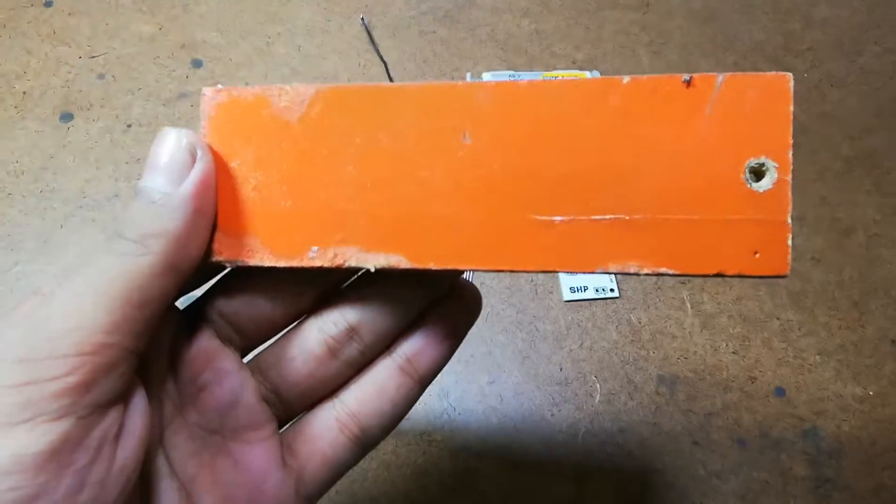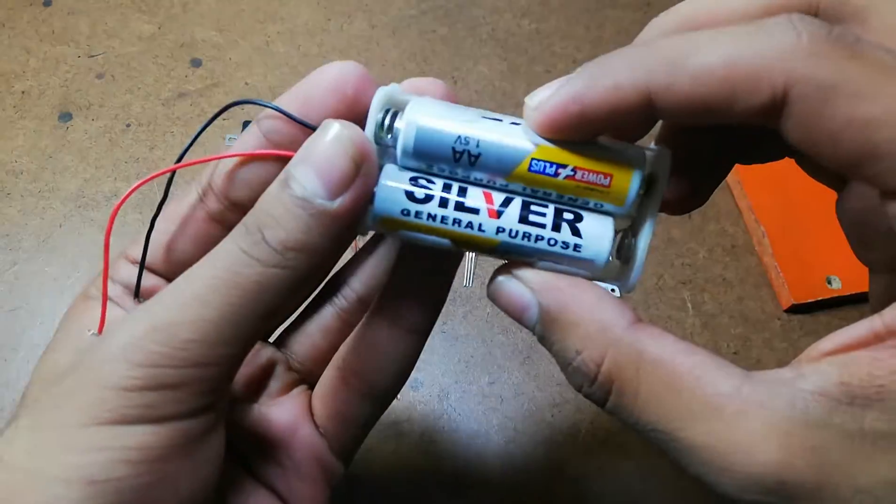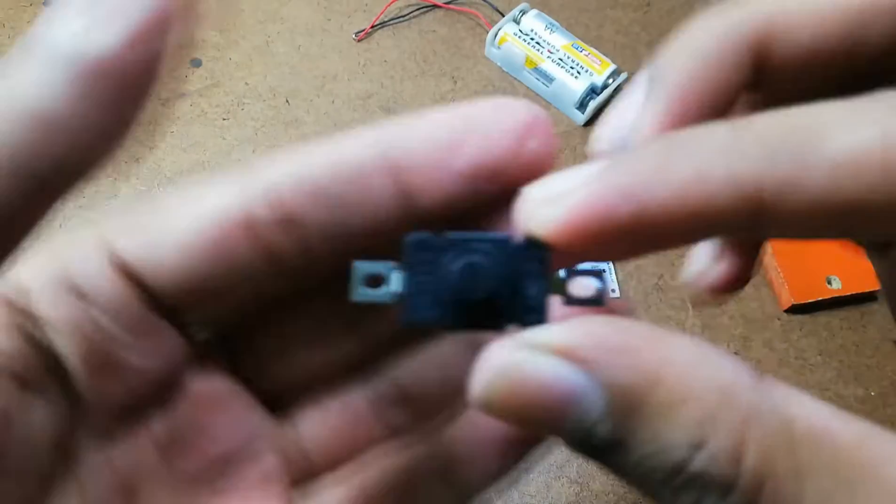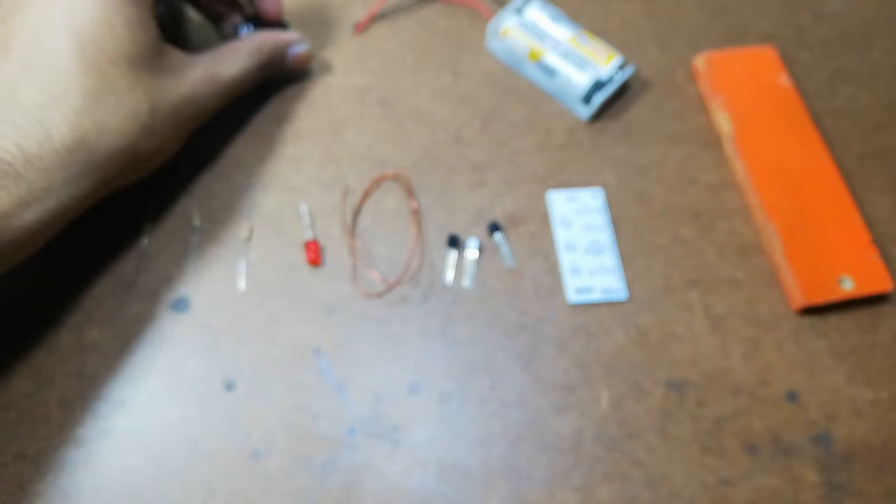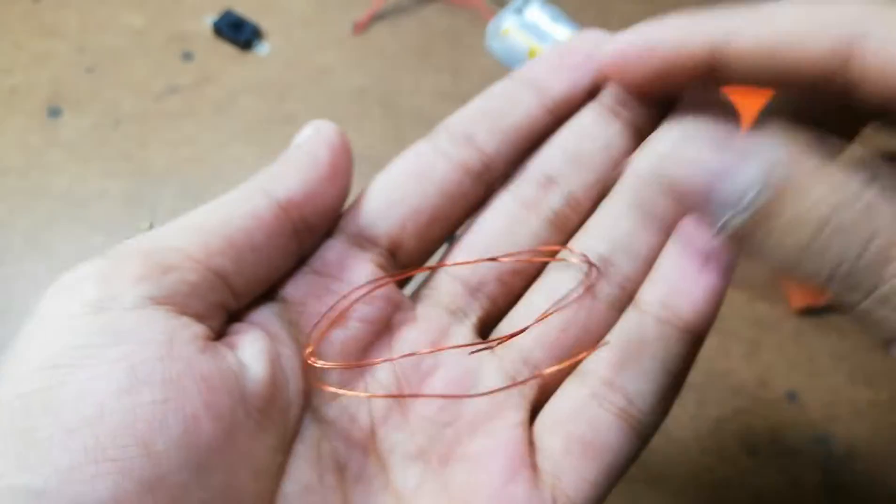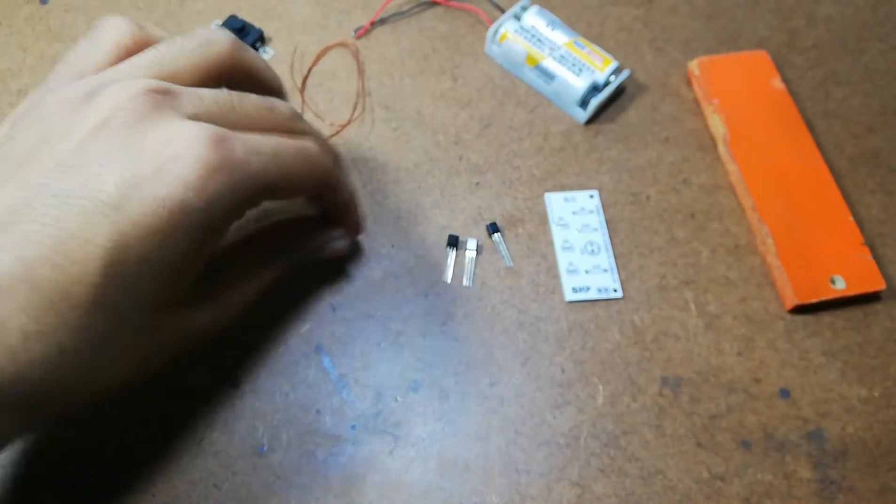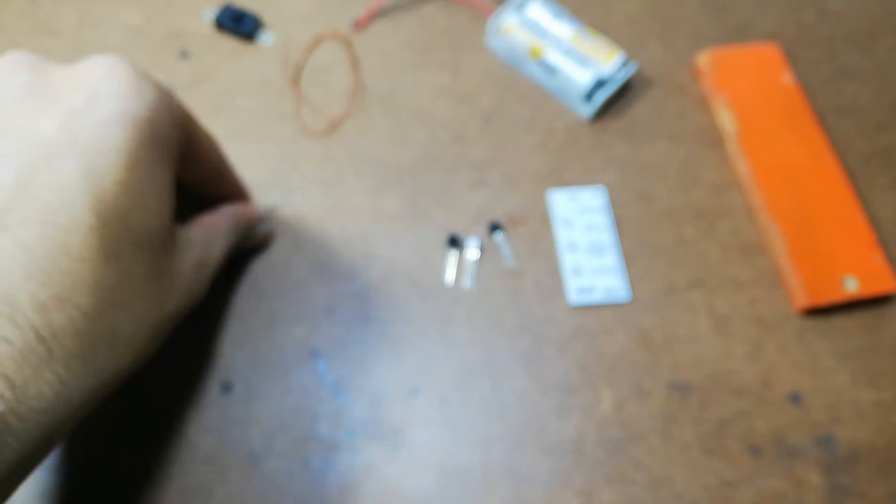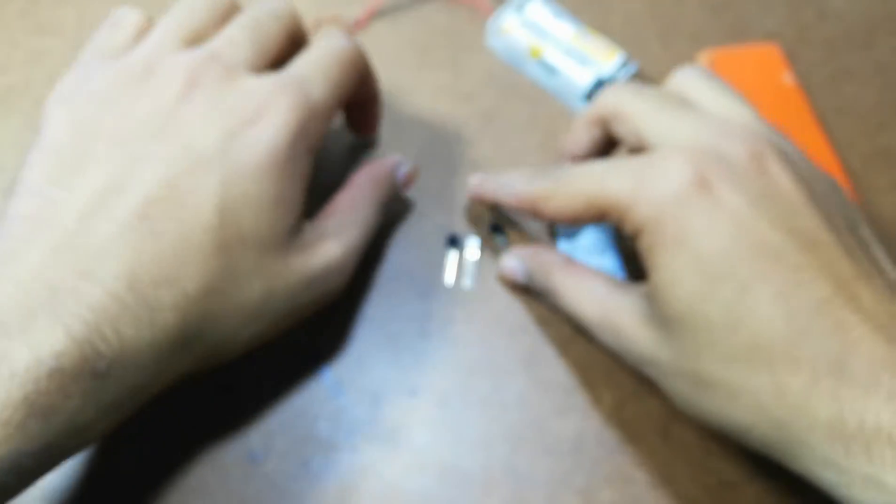This battery holder with two batteries of 1.5 volts each, this push button switch, a piece of 26 gauge copper wire and LED, three resistors having the resistance 220 ohms, 100 kilo ohms, and one mega ohm.